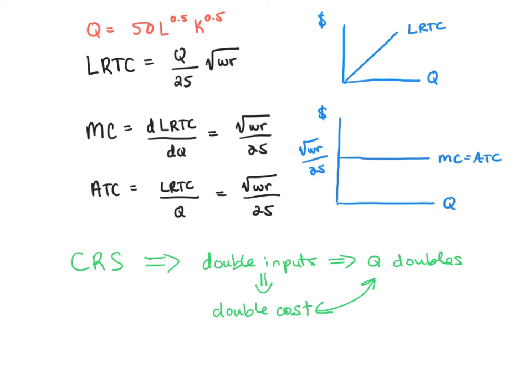This works for any factor, not necessarily doubling. We could triple the inputs, which would triple the output and triple the cost. We could quadruple the inputs, which would quadruple the output, which would quadruple the cost.